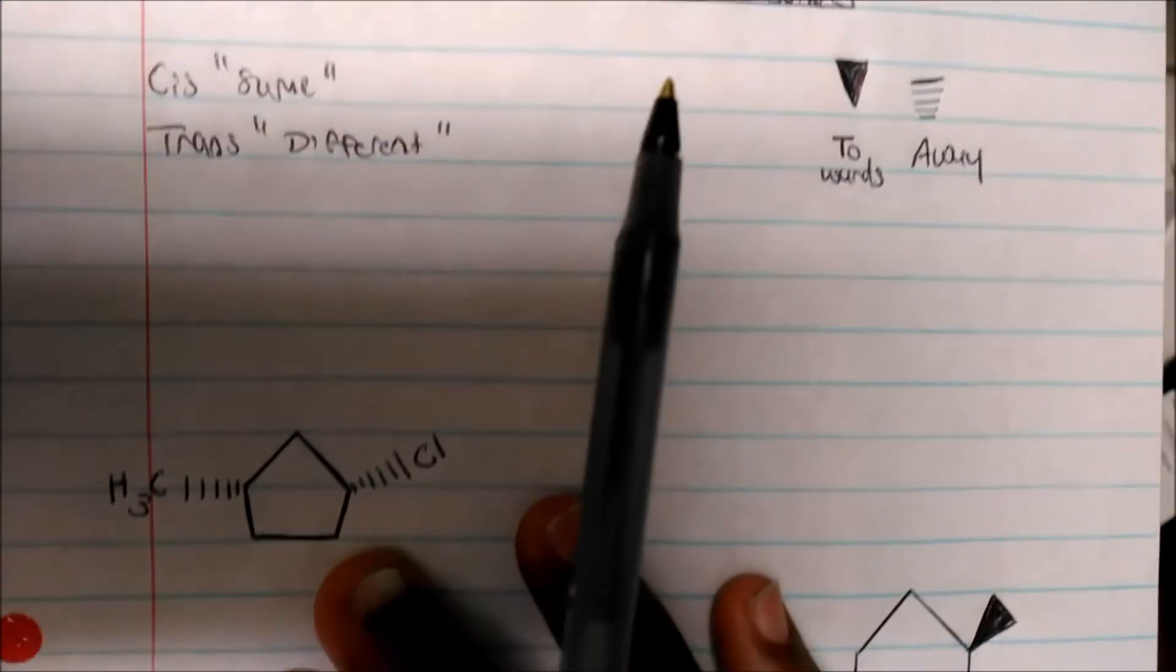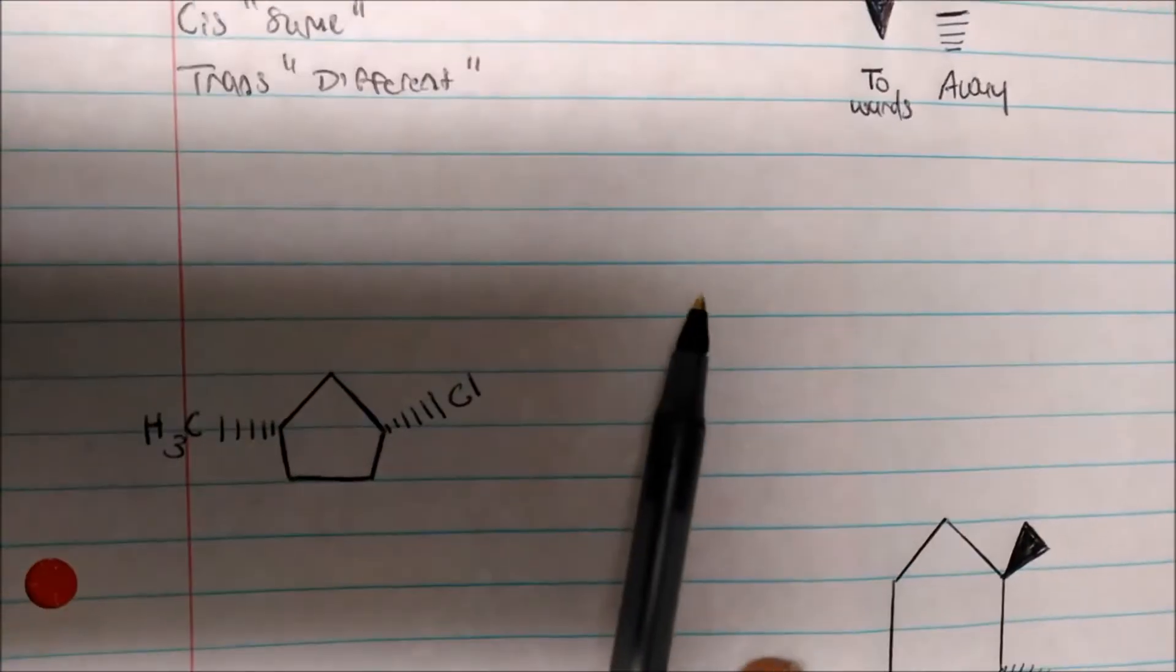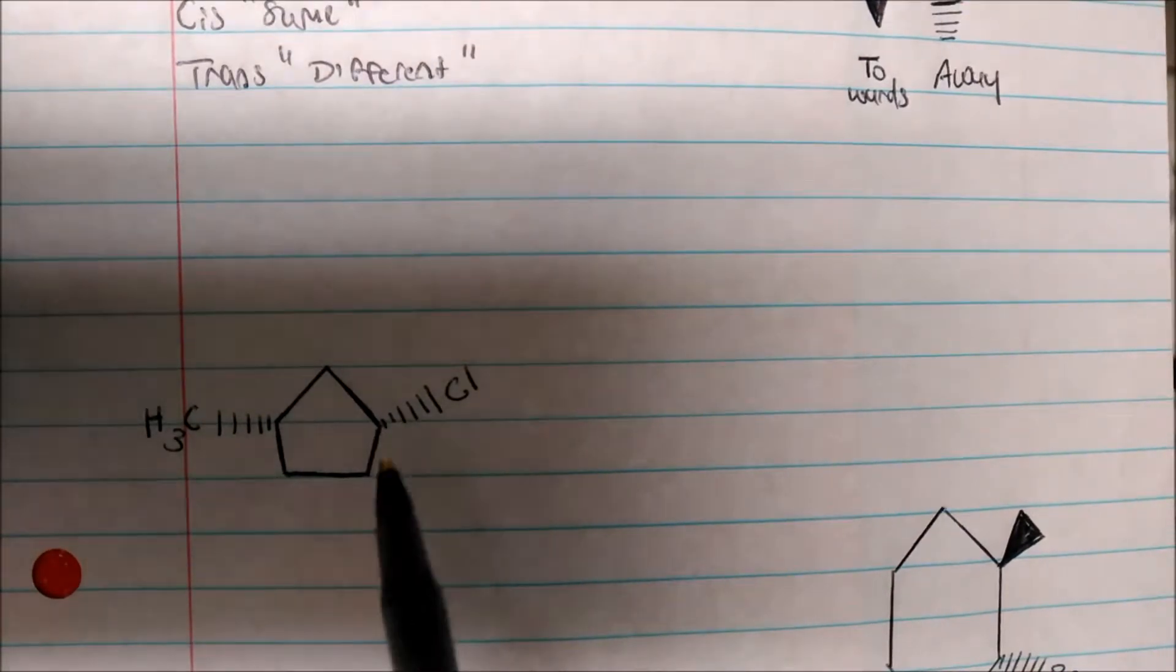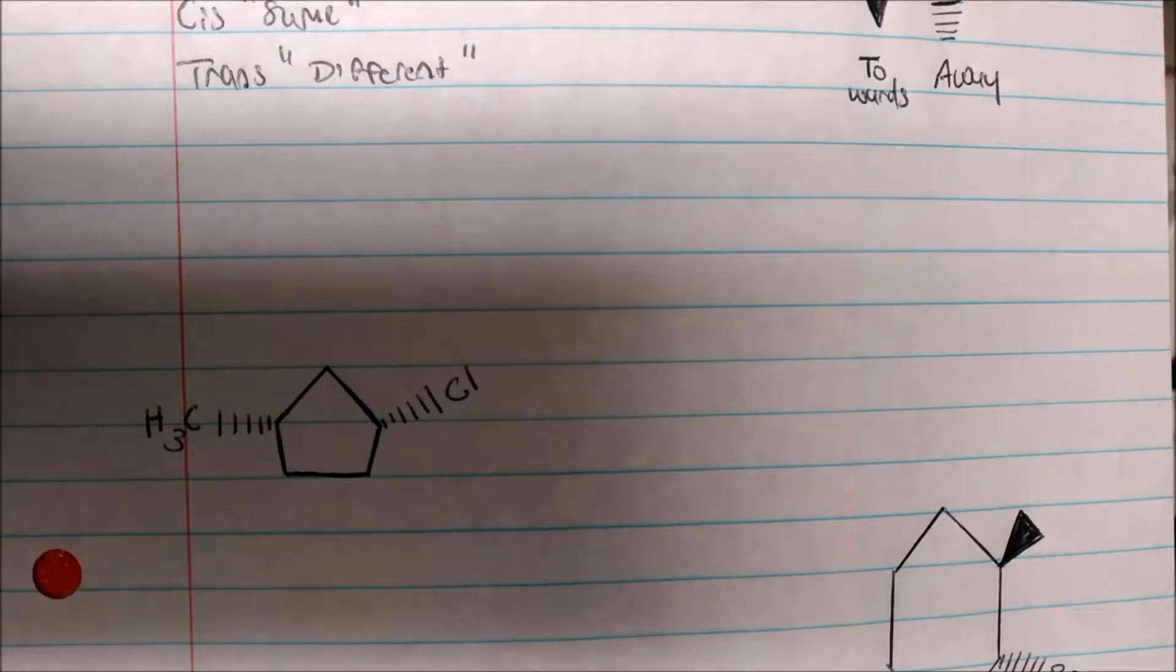So look at this. How would we name this compound? Well, again, they're both going away or sort of going down, per se, if you could visualize it. So this will be cis because they're both going away.